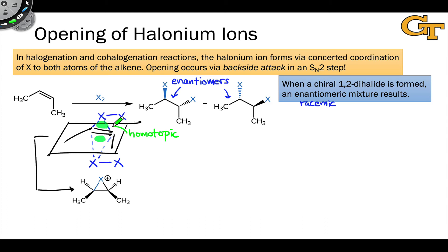From that, we can conclude that these two green areas are homotopic. Therefore, addition to the top or bottom face — addition along either of these green areas — is going to lead to the same halonium ion. However, we go from this single halonium ion to a mixture of enantiomeric products. How is this?